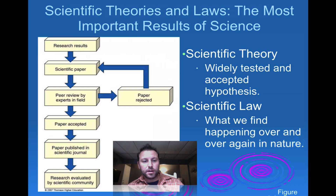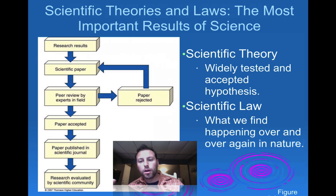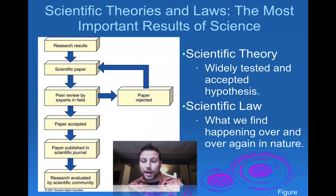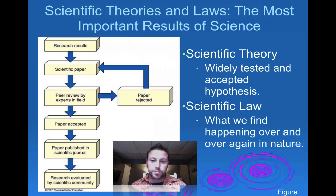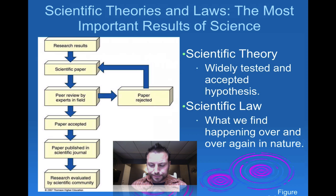We can then take this and put it into a scientific paper. At that point, we have peers — a body of people — review it. They'll either accept what happened in that paper or reject it. If it's rejected, the author will have to go back, rework that paper, or even rework their hypothesis — rework any portion of that process — until it's accepted. At that point, it can be published in a journal, evaluated by the rest of the community, and becomes information that others can use to help advance their scientific work.